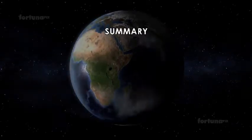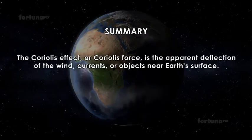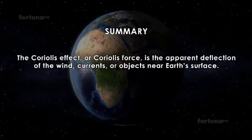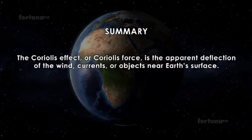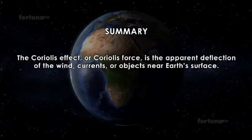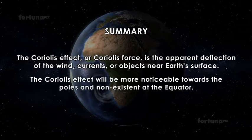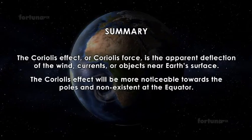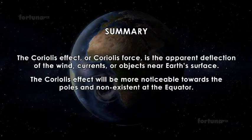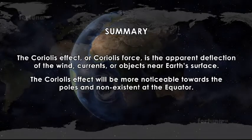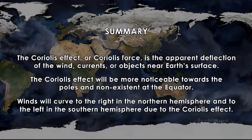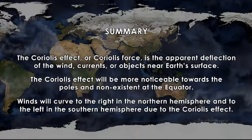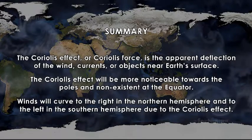Summary: The Coriolis effect or Coriolis force is the apparent deflection of the wind, currents or objects near Earth's surface. The Coriolis effect will be more noticeable towards the poles and non-existent at the equator. Winds will curve to the right in the Northern Hemisphere and to the left in the Southern Hemisphere due to the Coriolis effect.